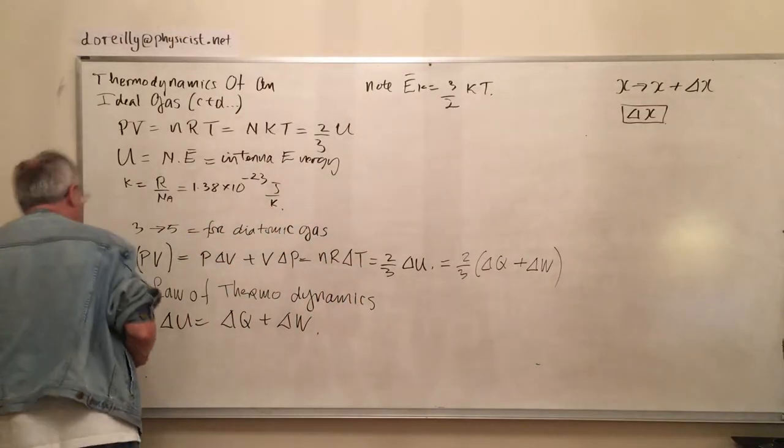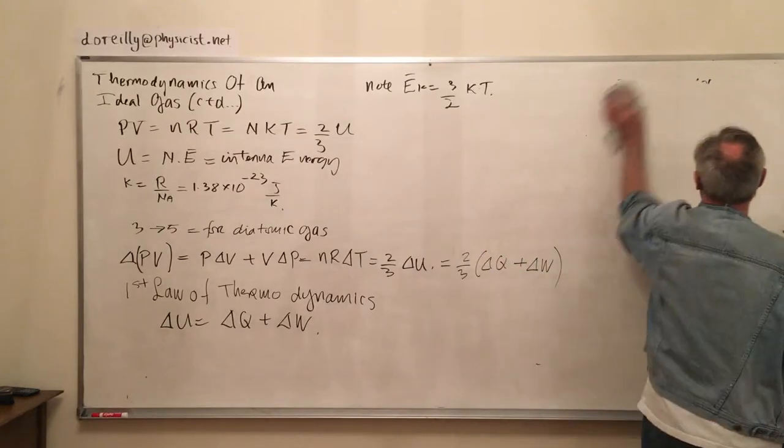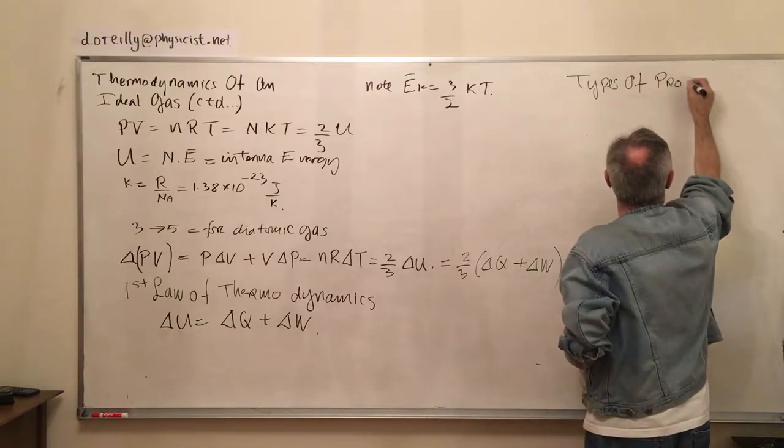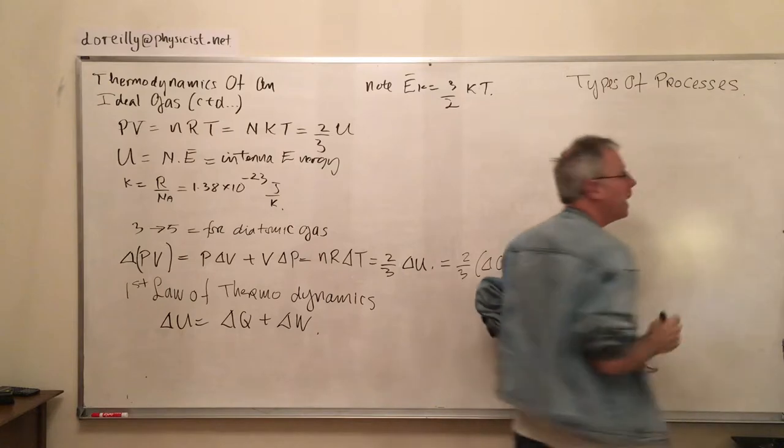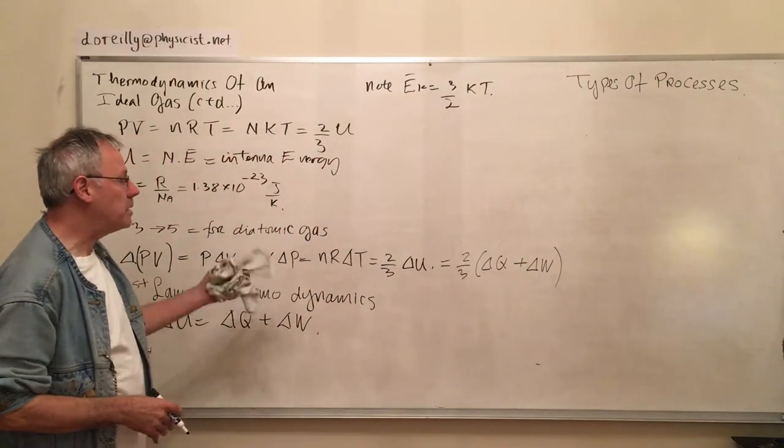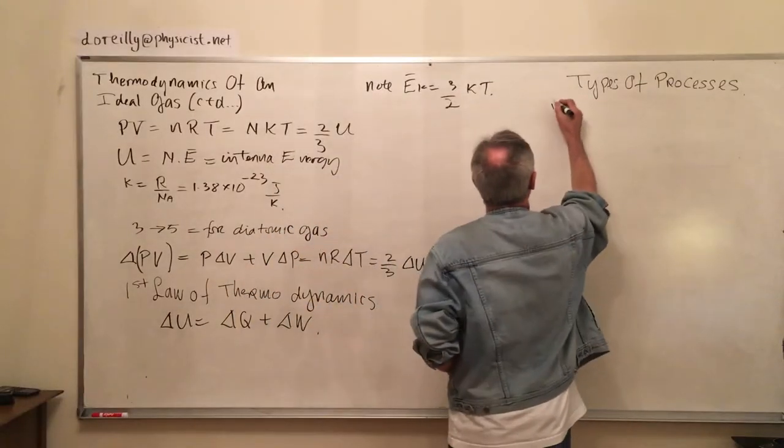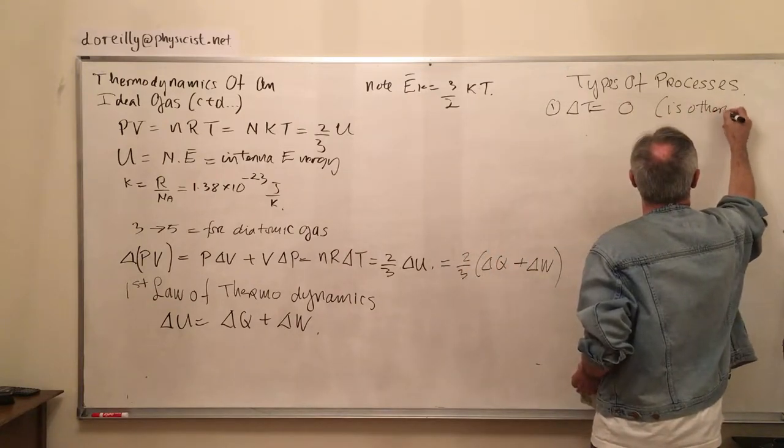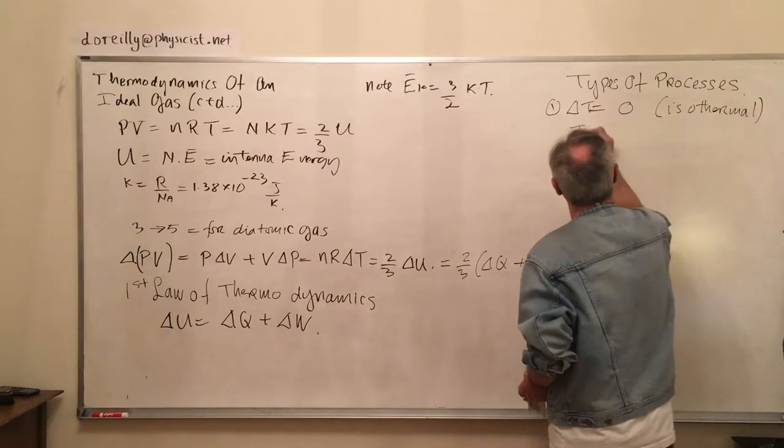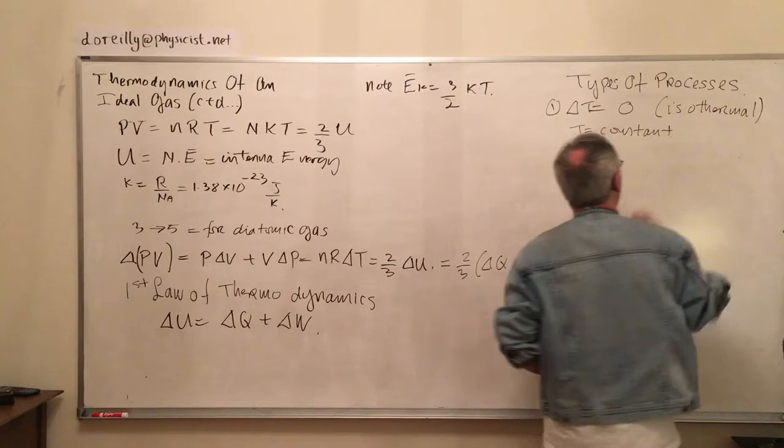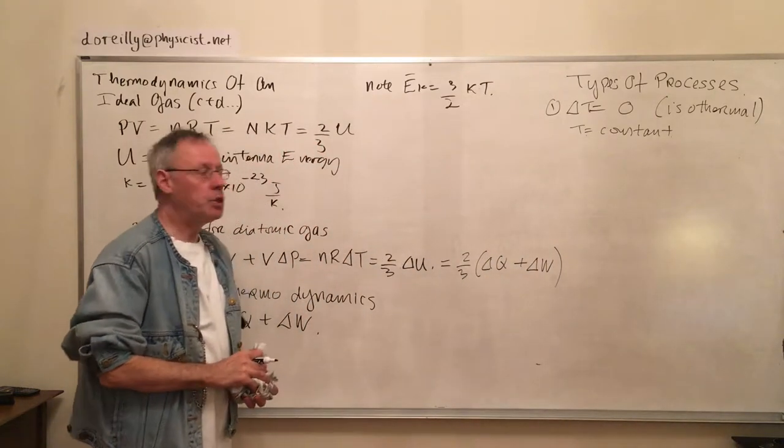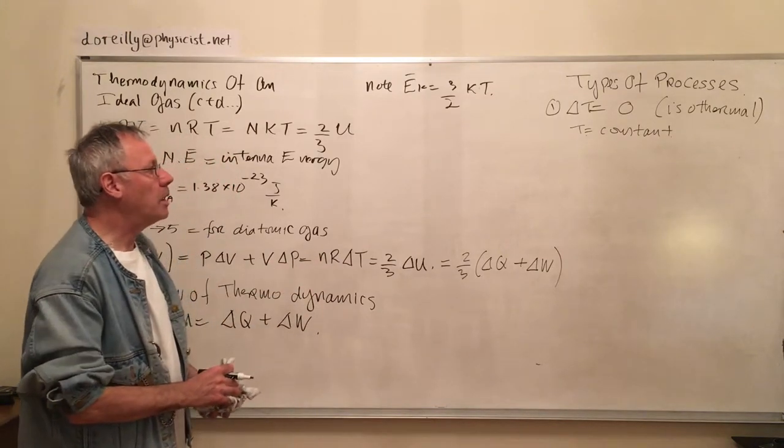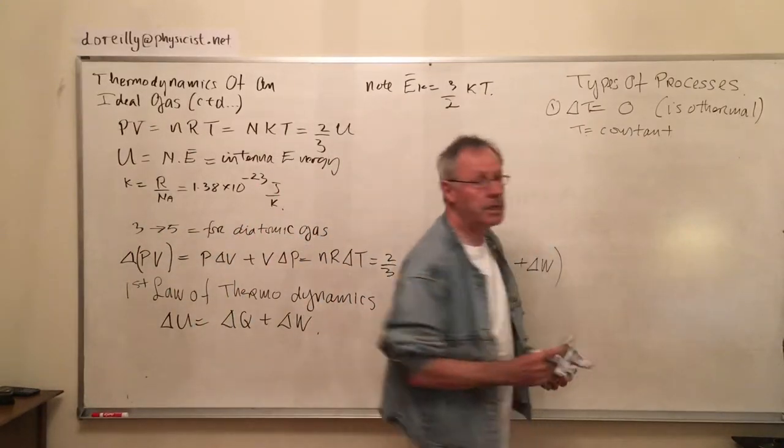We're going to identify at least four and possibly five types of thermodynamic processes. Each process is defined very simply to keep your thoughts clear. The first one: in the first case we will say there is no change in temperature, delta T equals zero. In other words, the variation delta T is zero and the process is called isothermal. Iso means the same - isobar is iso pressure.